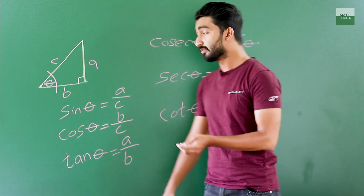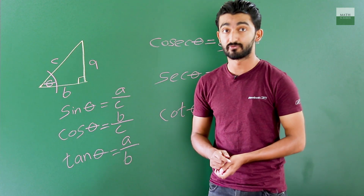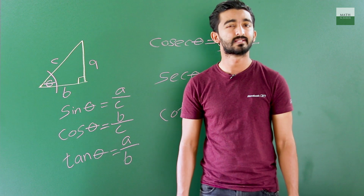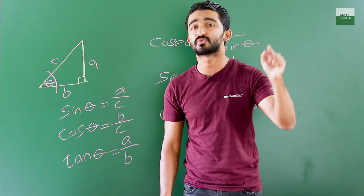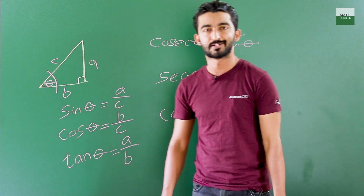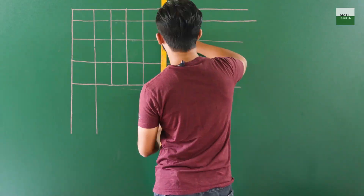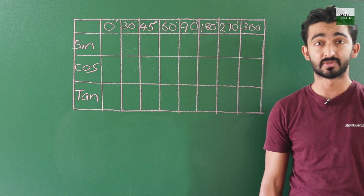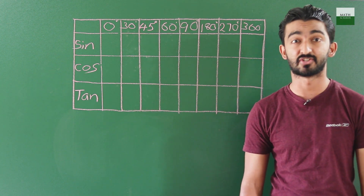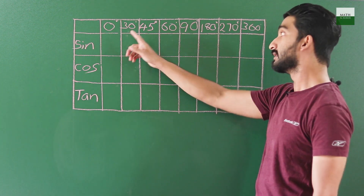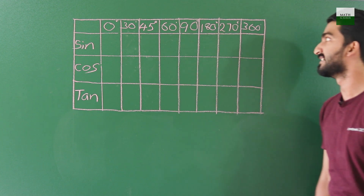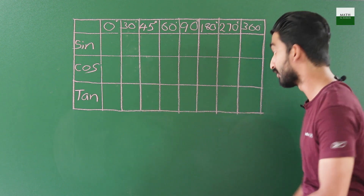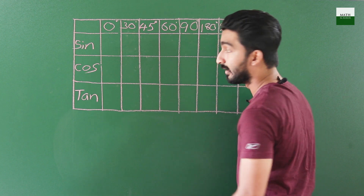You have to learn by heart some basic trigonometric values in order to deal with trigonometric questions confidently. The angles you must memorize are: 0°, 30°, 45°, 60°, 90°, 180°, 270°, and 360°. Note that 360° is basically the same as 0° because it is like going in a circle and coming back to the same point.